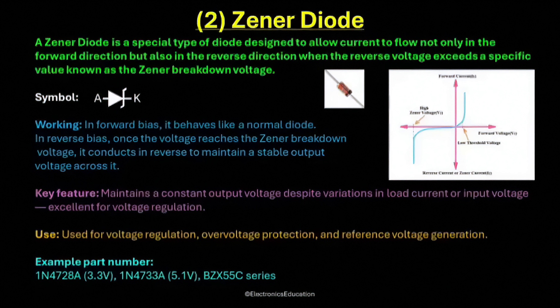Just like a normal diode, the Zener diode has two terminals — an anode and a cathode. The symbol of the Zener diode looks similar to a standard diode, except that the vertical line on the cathode side has small bent edges. These bent lines represent the Zener breakdown property of the diode. The letter A stands for anode and the letter K stands for cathode.